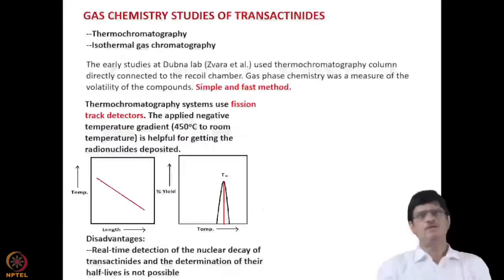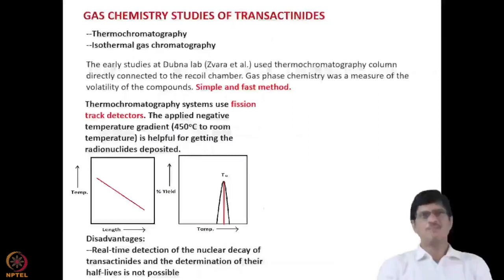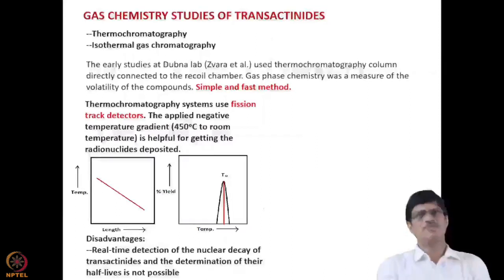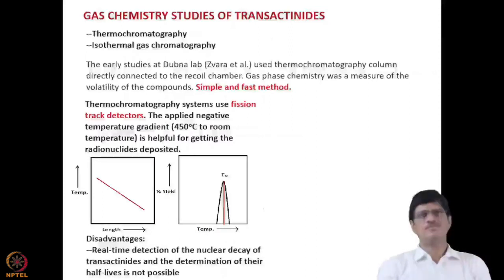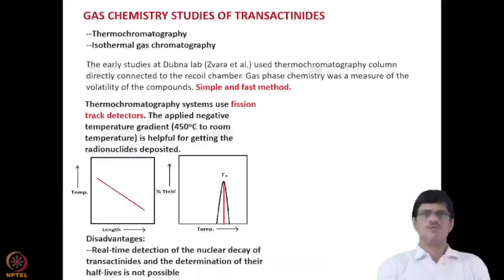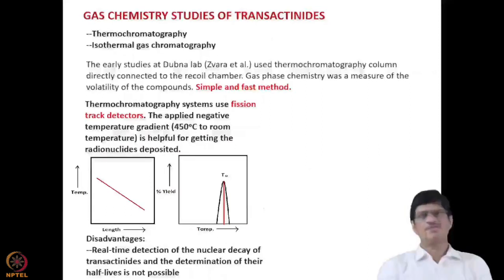In a similar manner, experiments can be done for the rutherfordium chloro complexes and oxychloro complexes, formed by reacting with oxygen, and compared with zirconium and hafnium complexes. The experimental method for gas chemistry studies of transactinides is rather simple. Two types of experimentation are done: thermochromatography and isothermal gas chromatography. Early studies at the Dubna lab in Russia used a thermochromatography column directly connected to the recoil chamber — a very simple and fast method for measuring compound volatility.